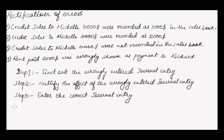The first question that we have here is: credit sales to Michelle as $10,000 were recorded as $1,000 in the sales book. So what we're gonna do is first find out the wrongly entered journal entry. So we can guess that entry would have been... this is what we found out, this is the wrongly entered journal entry.